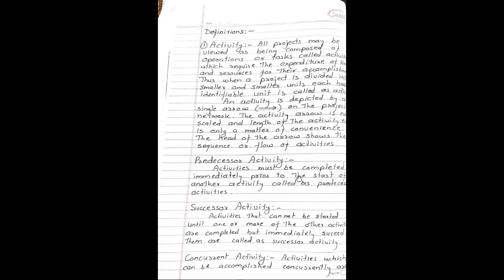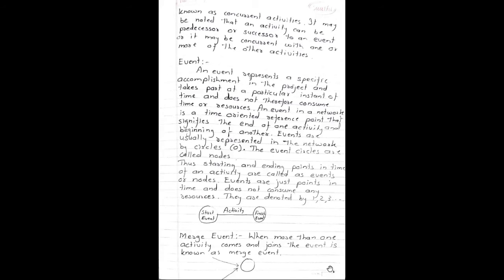Predecessor activity: Activities must be completed immediately prior to the start of another activity, called as predecessor activity. Successor activity: Activities that cannot be started until one or more of the other activities are completed but immediately succeed them are called as successor activity. Concurrent activity: Activities which can be accomplished concurrently are known as concurrent activities. It may be noted that an activity can be predecessor or successor to an event or it may be concurrent with one or more of the other activities.